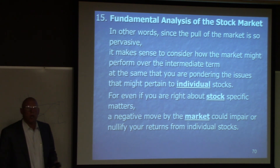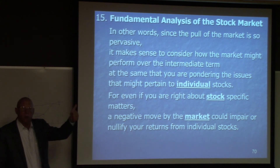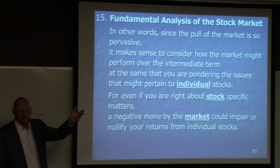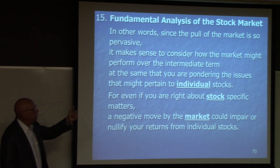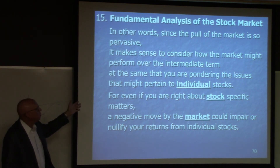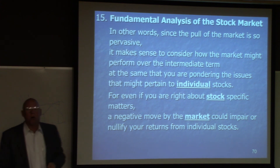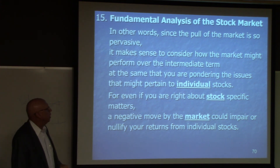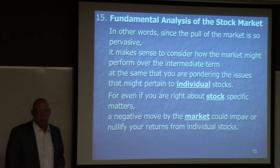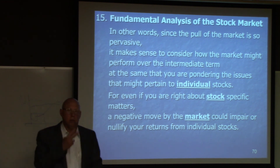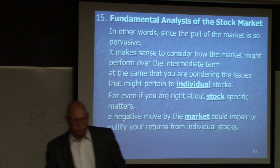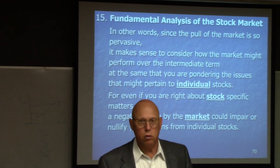We've looked at top-down investing: the global economy, the domestic economy, industries, and individual companies. We spent a lot of time looking at the U.S. economy, and we'll move on to the next level of top-down investing in the next chapter. Until then, peace out — chapter 9 is done.